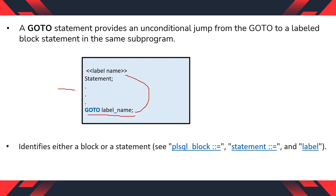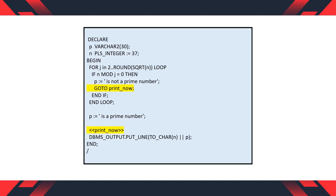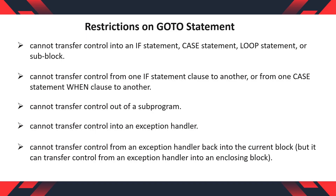GoTo identifies either a block or a statement. In this simple example, 'goto print_now' is written, where 'print_now' is the label name. When this GoTo statement executes, it transfers control to that label. Note: GoTo cannot transfer control from an exception handler back into the current block, but it can transfer control from an exception handler into an enclosing block.